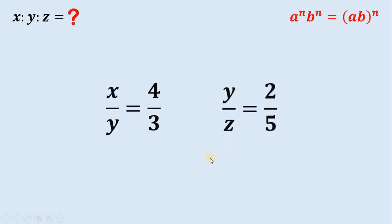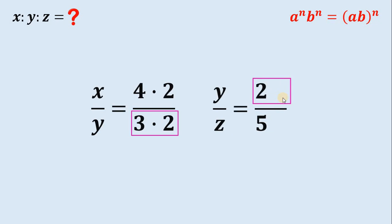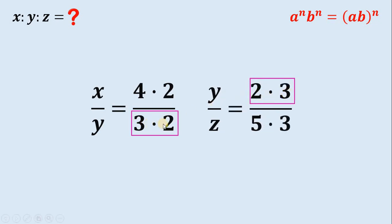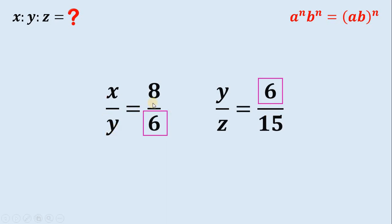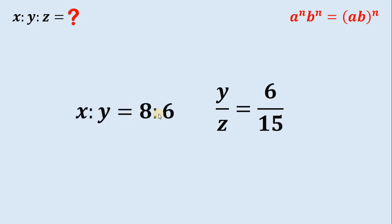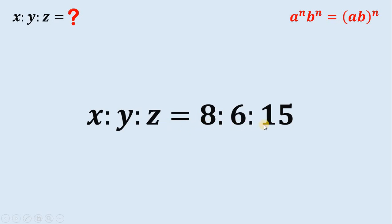Now let's combine these two results to find the ratio of x, y, and z. The value of y in the two ratios is not the same, so we fix this by multiplying 4 over 3 by 2 over 2, and multiplying 2 over 5 by 3 over 3 — noting that 2 times 3 and 3 times 2 are the same. Therefore, x to y becomes 8 to 6, and y to z becomes 6 to 15. Since both values of y equal 6, we can combine these two ratios: x is to y is to z equals 8 is to 6 is to 15.